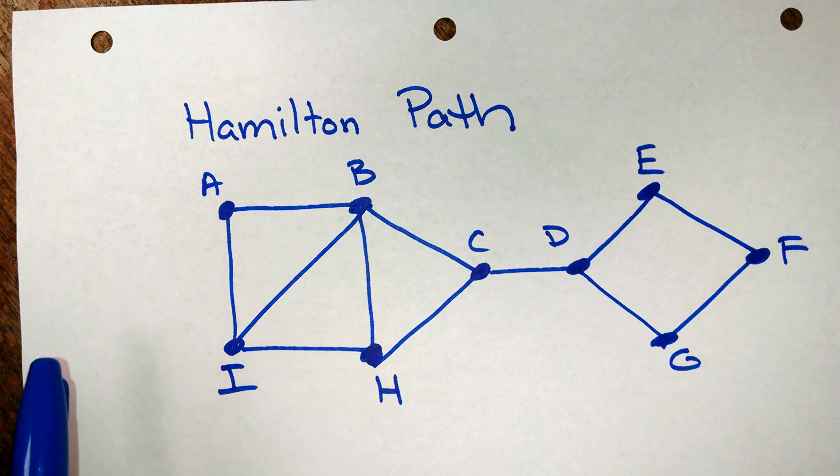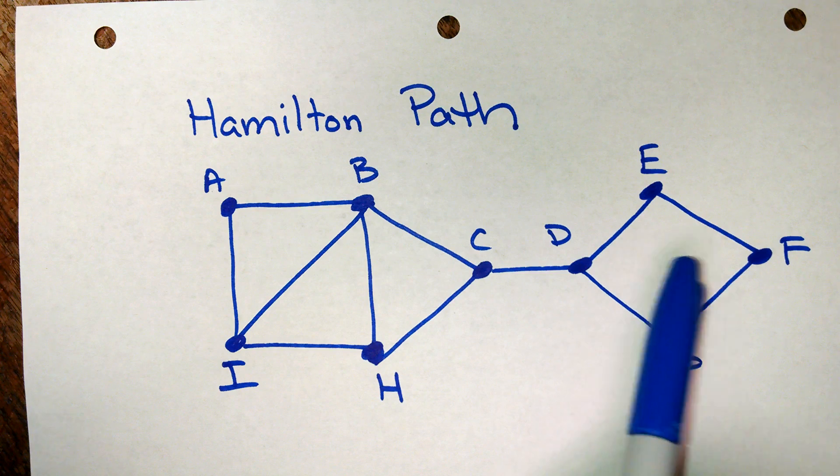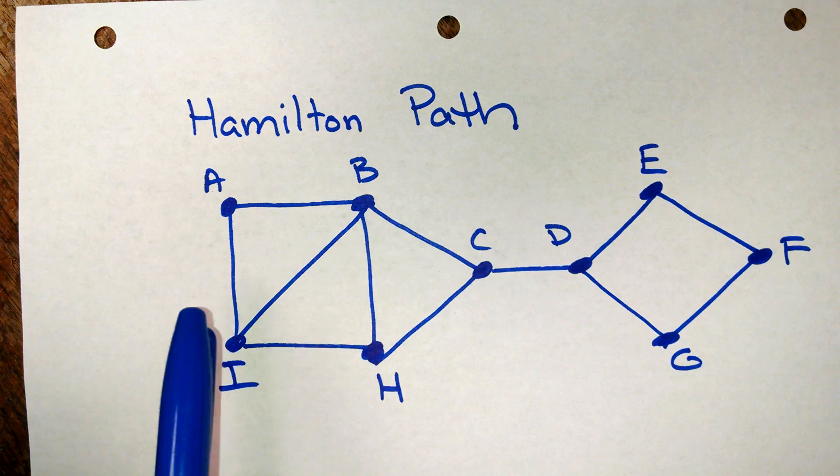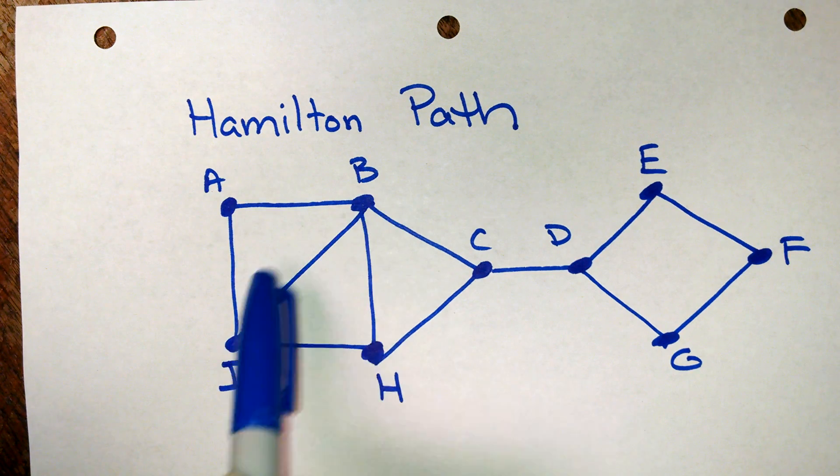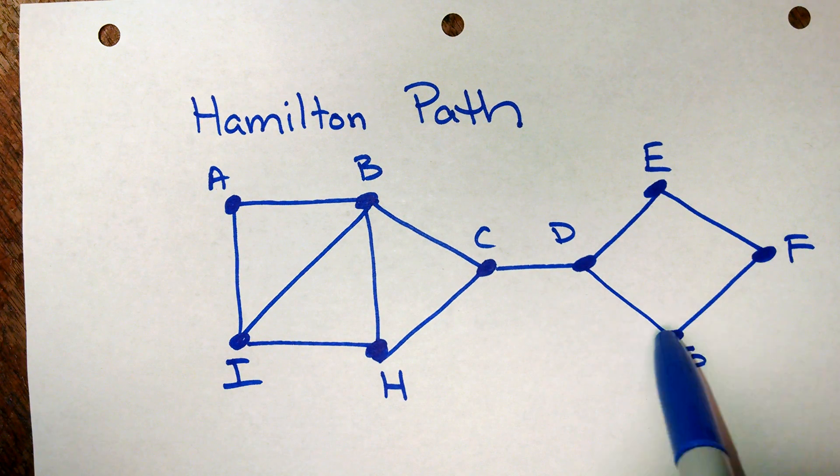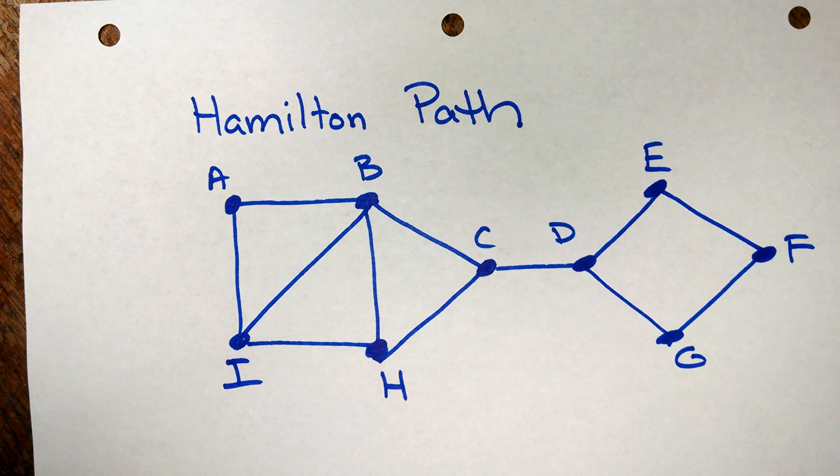So if I am looking at this graph here that I have, just a random graph that I came up with, if I need a Hamilton path in this graph, I need to make sure that it goes through every single one of these vertices. And it can only go through the vertices once.